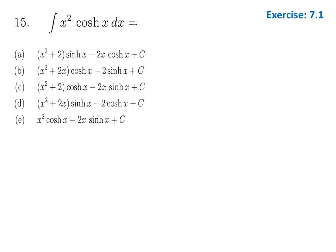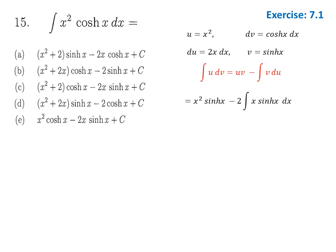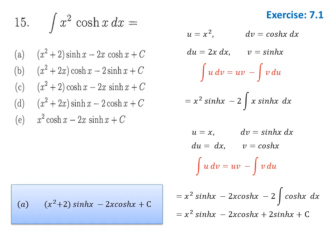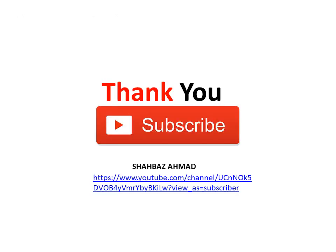Question 15 from exercise 7.1 uses integration by parts twice. First let u = x², dv = cosh(x) dx; differentiating u and integrating dv = sinh(x). A second application with u = x, dv = sinh(x) dx gives three terms. Collecting terms involving sinh(x) and cosh(x) yields the final answer. Option A is the answer. Hope you enjoyed — thank you very much, and please subscribe to the channel.